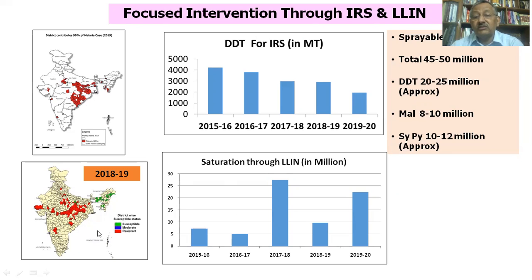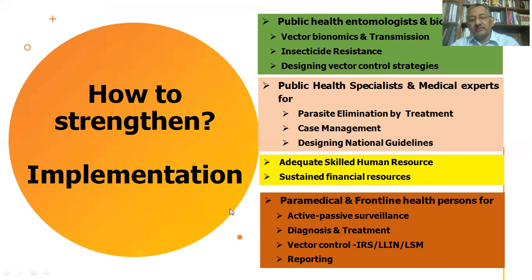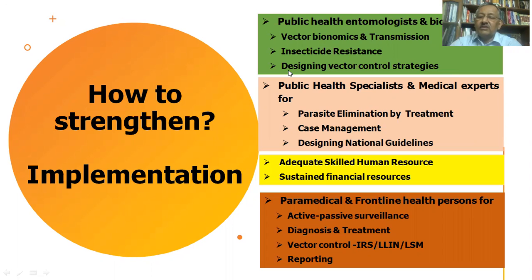Insecticide resistance monitoring is critically important. The map shown illustrates that certain areas are showing complete resistance to insecticide while other areas remain susceptible to DDT. This country-level resistance map is being monitored regularly. For operational capacity, public health entomologists and biologists are required for three things precisely: understanding vector dynamics and local transmission, monitoring insecticide resistance, and designing appropriate vector control strategies to guide policy makers and local administrators on which control strategy is best suited for each area.